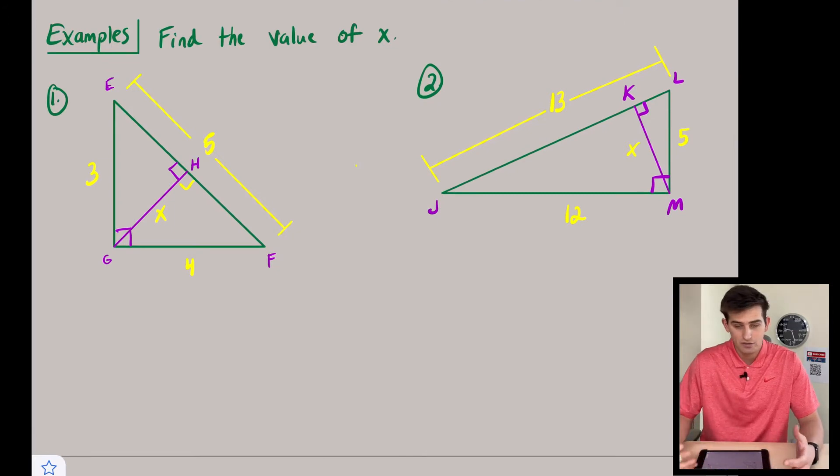So here we go, example number one. We have our x that we are trying to solve for, our altitude. So to the left, if we're looking at this big triangle, triangle EGF, we have one of its legs is three units, the bottom leg is four units, and our hypotenuse is five units. So we're going to try and set up a proportion here, or two ratios that would be equal to each other, so that we can cross multiply and simplify to figure out what x is.